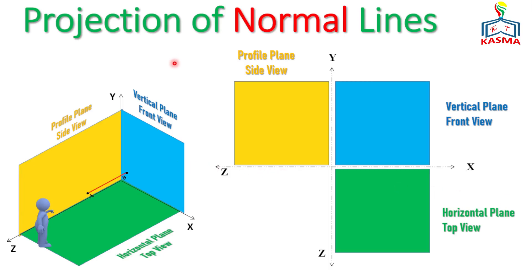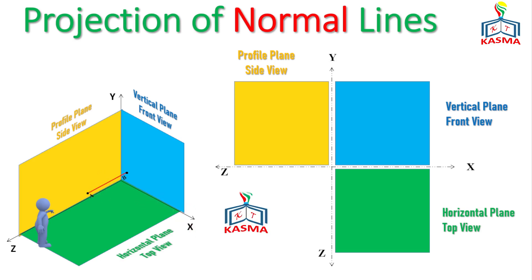In this video I will show you the projections of normal lines — how we could project a line if it is a normal line. First we will discuss what a normal line is. A normal line means when that line is parallel to either one of the principal axes. In this case we have X, Y, and Z axes.